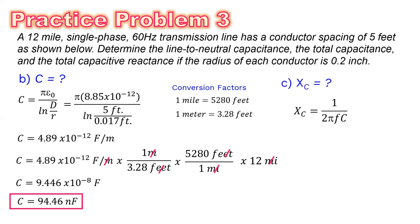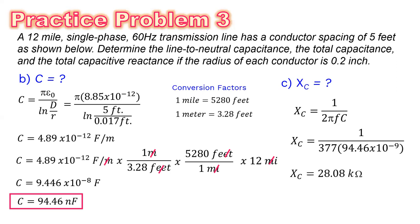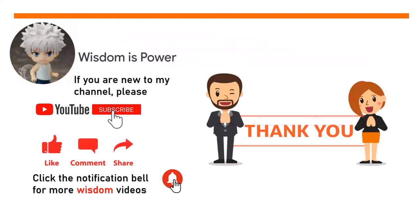For the capacitive reactance, X sub C equals 1 over 2 pi f C. Since the frequency is 60 Hz, the angular velocity is 377 radians per second. So X sub C equals 1 over 377 multiplied by 94.46 times 10 to the negative 9 farads, giving a capacitive reactance of 28.08 kilohms.